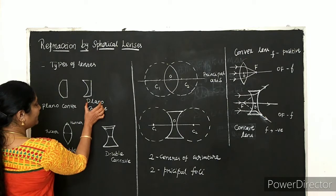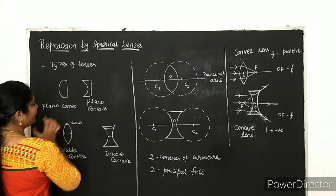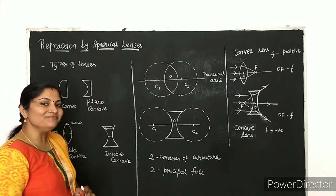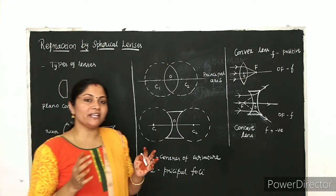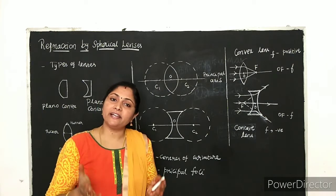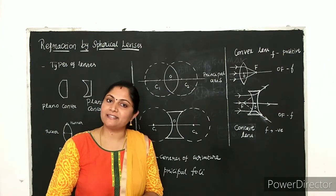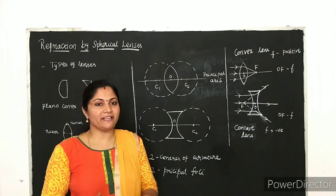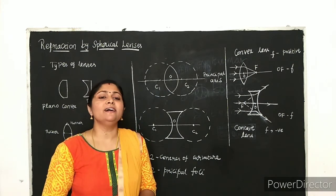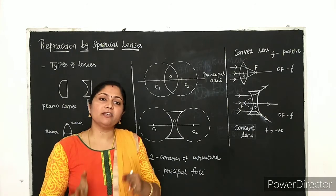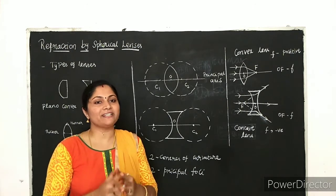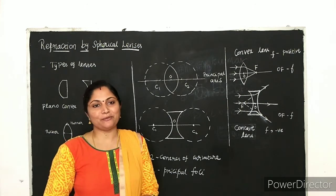And where one surface is plane and the other is curved inward, that is set to be a plano-concave lens. When both sides have spherical surfaces, that is called a double concave or double convex lens.